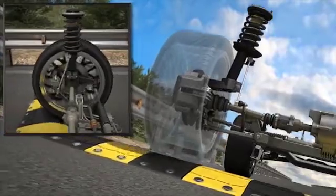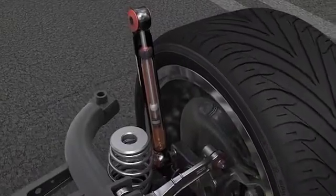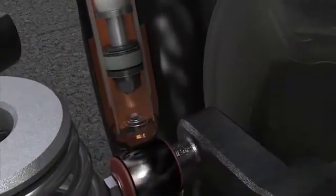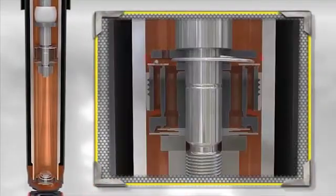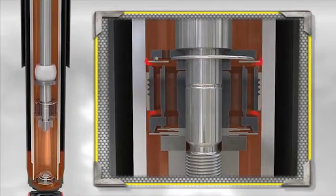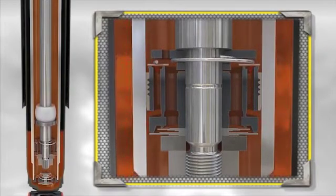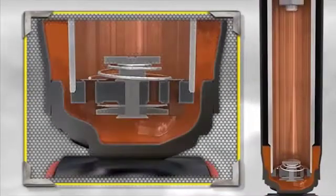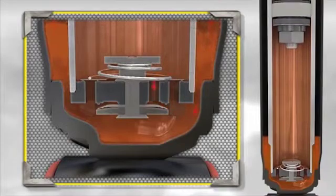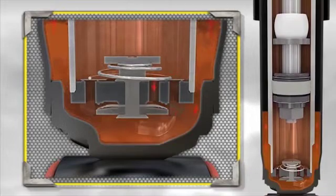When the shock absorber compresses due to uneven ground, the rod enters the working chamber, increasing the pressure of the oil contained in it. During this so-called compression phase, the compression valve controls the resistance of the damper movement, while oil flows almost freely from the bottom of the working chamber to the top through the piston valve. Increased oil pressure in the working chamber causes the compression valve to progressively open, and the excess oil to flow into the reserve tube in a controlled manner.